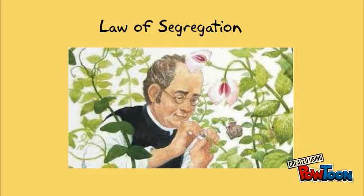Gregor Mendel developed the Law of Segregation while studying the traits of pea plants. After exploring generations of parents and offspring, looking at specific traits, he was surprised to find some common rules, now known as the Laws of Genetics, which govern how all traits are passed from parents to offspring.